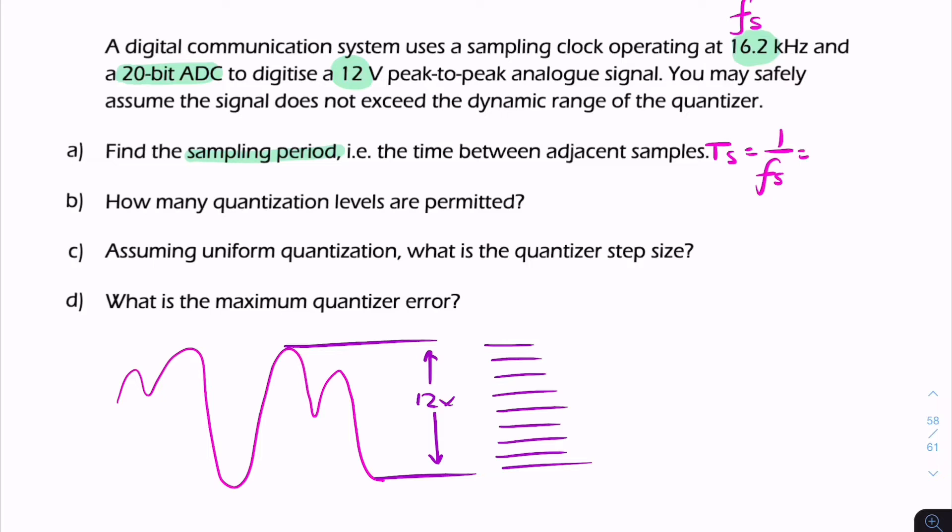How many quantization levels are permitted? That's basically L. We're given the number of bits, 20 bits, which gives us L because L is simply 2 to the power n, or 2 to the power 20. If you calculate that, it's just over a million.